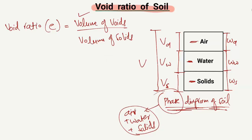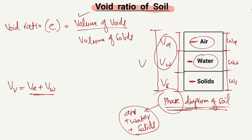Now, what is the volume of voids? The volume of voids, represented by VV, is basically the combination of the volume of air and the volume of water. The combination of these two is known as the volume of voids.